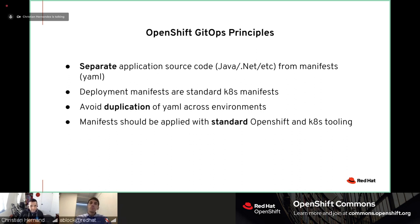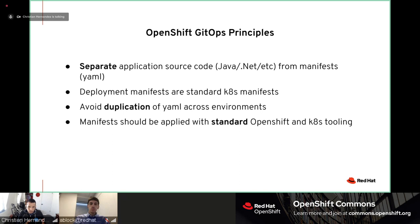One of the big things is you want to avoid duplication of YAML across environments. Manifests should be applied with standard OpenShift and Kubernetes tooling — there's nothing new here if you've already been working with Kubernetes or OpenShift. There aren't really any new tools per se. It really is just standard OpenShift and Kubernetes tooling.